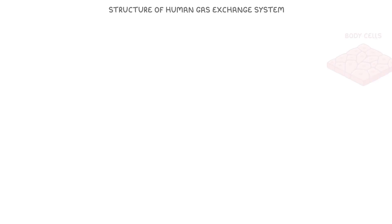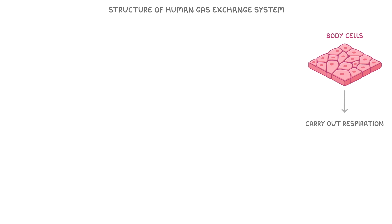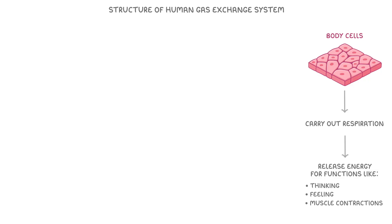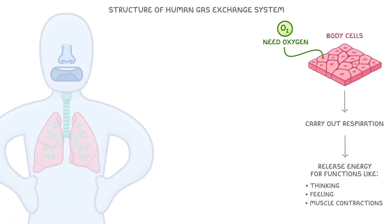Let's begin with the structure of the human gas exchange system. Our body cells carry out respiration and this is how they release the energy we need for functions like thinking, feeling, and the muscle contractions we use to move. Our cells need oxygen for respiration and without oxygen they wouldn't be able to release energy and we wouldn't be able to survive. We're going to follow the journey of oxygen through the human gas exchange system, which all starts when we breathe in air that contains oxygen.